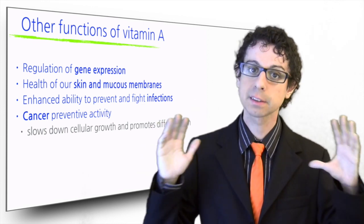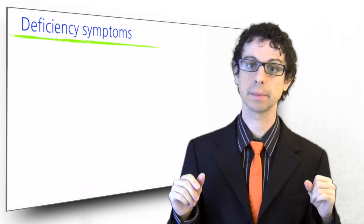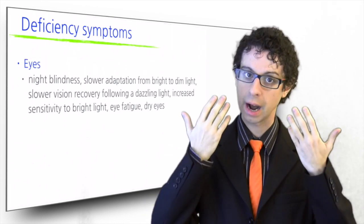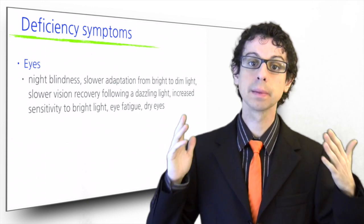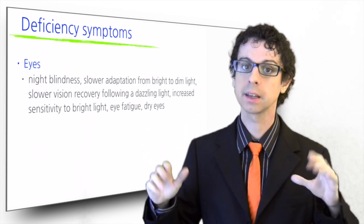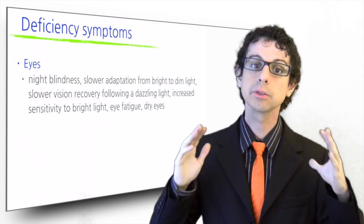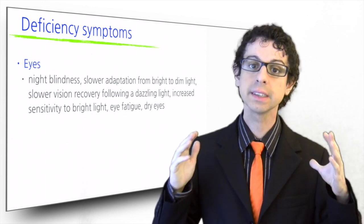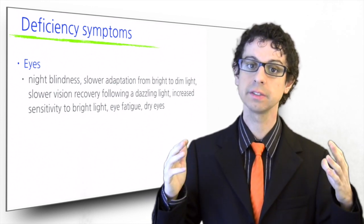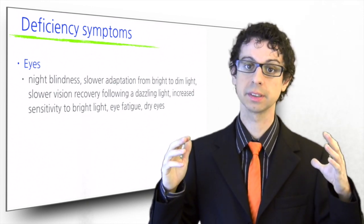But now let's recap and expand on the symptoms that may signal a marginal deficiency of vitamin A. Let's start with our eyes. Here we have night blindness, slower adaptation from bright to dim light, slower vision recovery following a dazzling light, increased sensitivity to bright light, eye fatigue after reading or watching television, often leading to headaches, and when deficiency is more severe, a feeling of dry eyes as you first open them after sleeping.